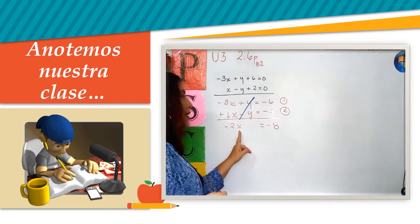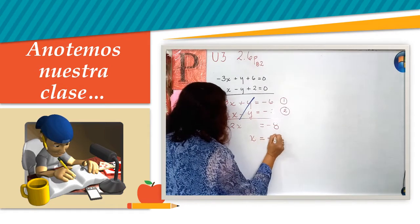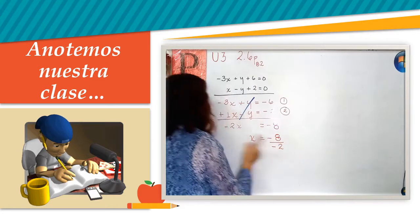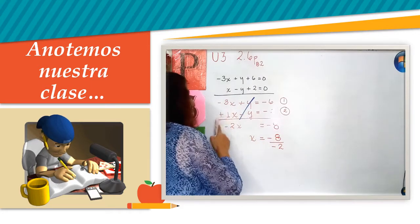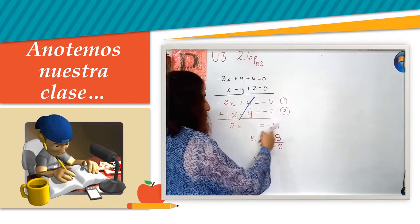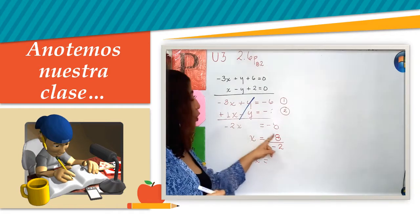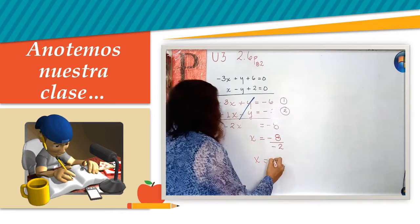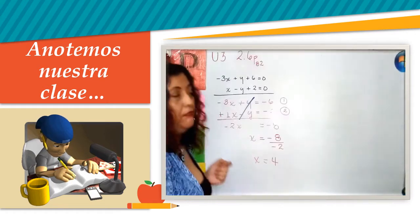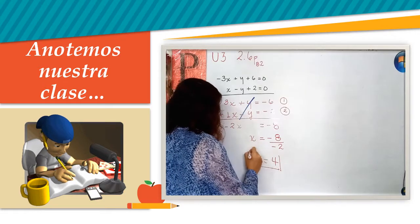Ahora voy a trasladar, como lo hemos venido haciendo. Les sugiero que siempre lo tomen con todo y signo. La operación que tengo es una división: 8 entre 2 me va a dar 4. Menos entre menos me va a dar positivo, 4.